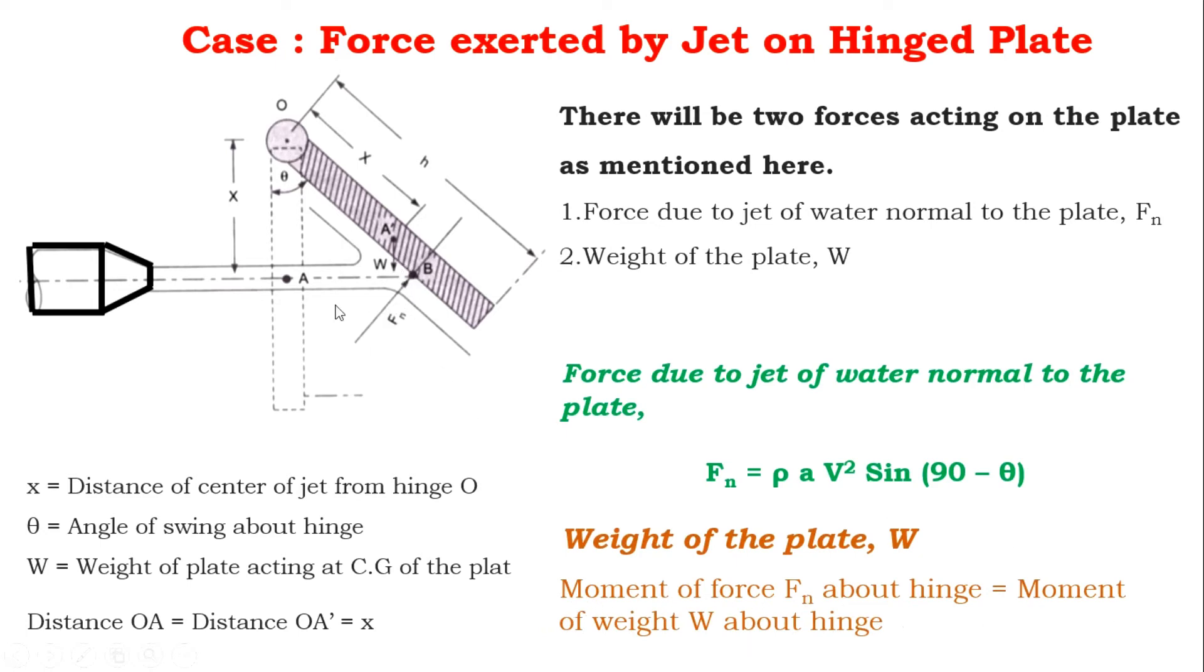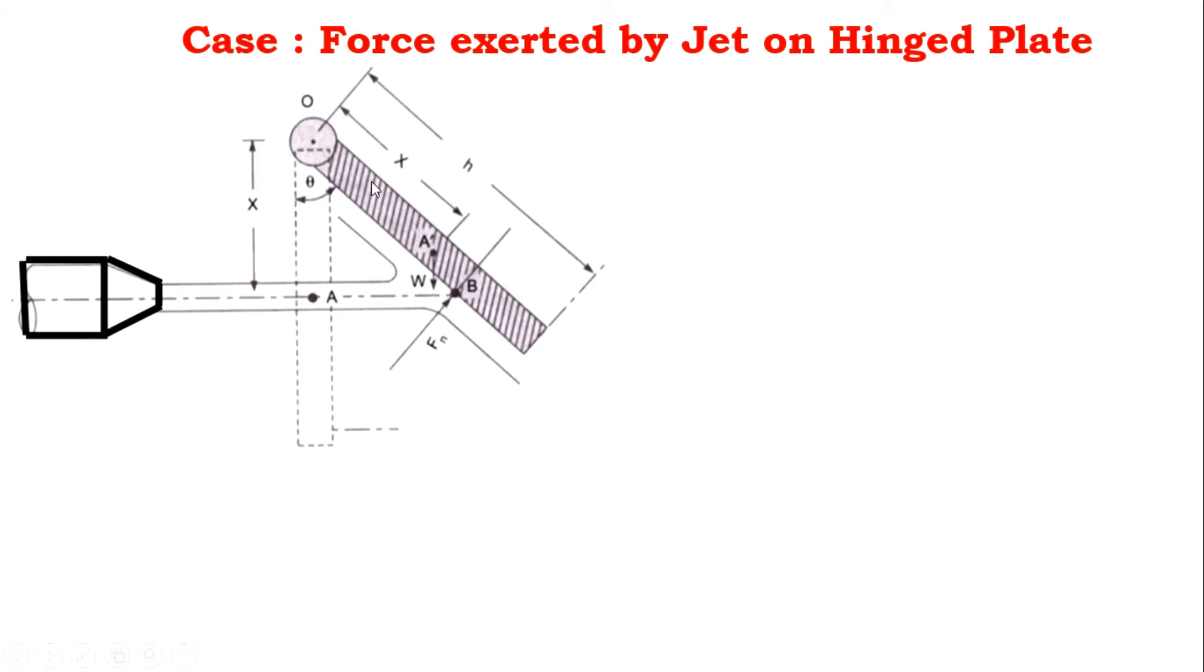Take the moment of force Fn about the hinge: Fn × OB. Substitute the value of Fn: ρAV² sin(90-θ) × OB. Now sin(90-θ) is equal to cos θ.